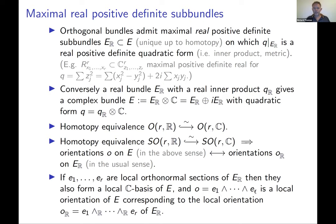There's also a homotopy equivalence between the two special orthogonal groups, which means an orientation on the complex bundle in the sense of the previous slide is equivalent to an orientation on the real bundle in the usual sense. In a local orthonormal basis of sections, if you wedge together an orthonormal basis of real sections you get an orientation in the complex sense.